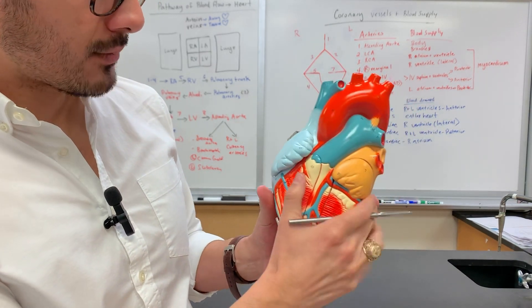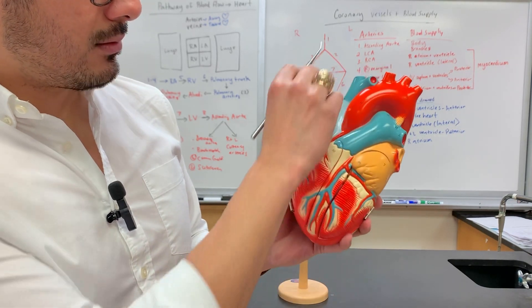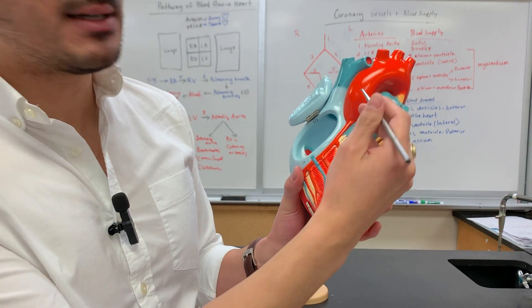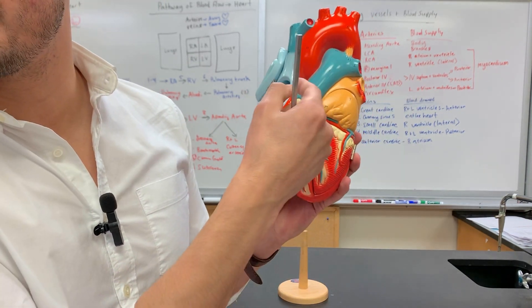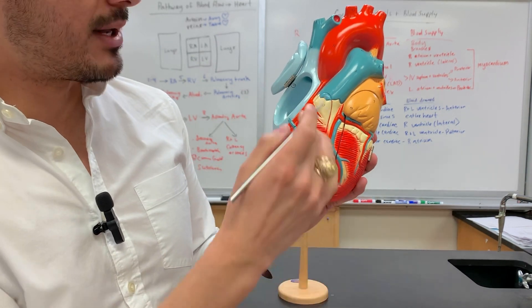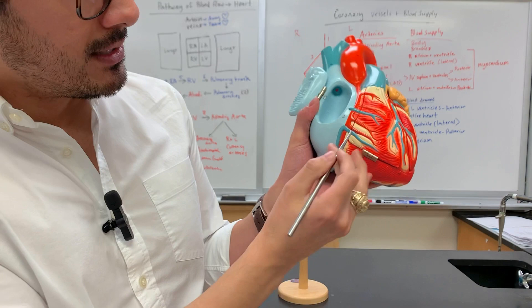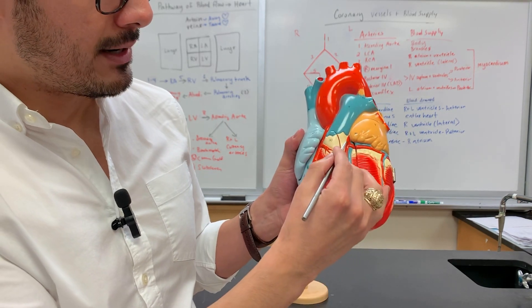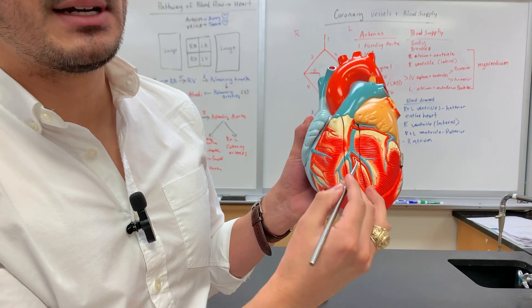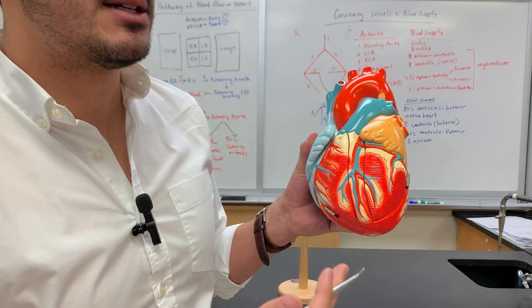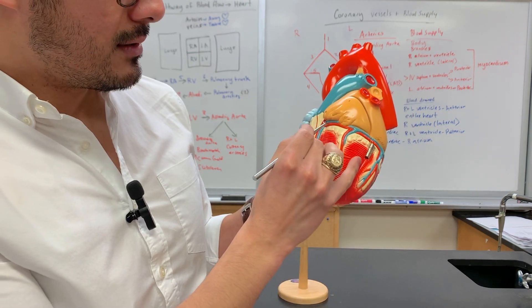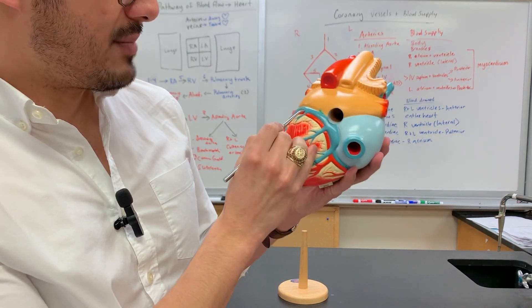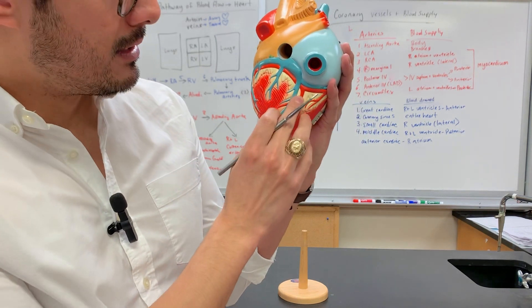Now let's go over some of the coronary arteries. This is the right coronary artery coming off the ascending aorta, and this is the left coronary artery — both branching from there because the heart needs its own blood supply. Following the right coronary artery around, this is where you find the marginal artery. From the left coronary artery branches the left anterior descending artery, also called the anterior interventricular. The one that wraps around is called the circumflex, which goes all the way around to the back side as the posterior interventricular artery.